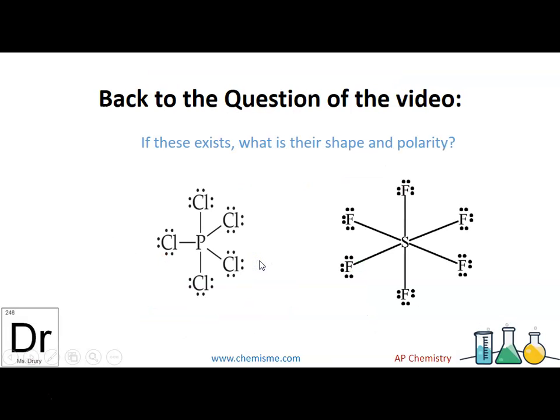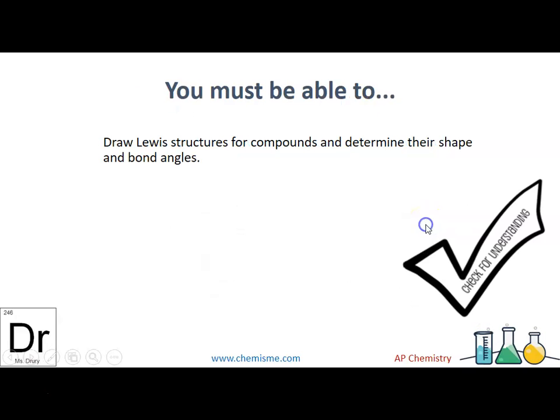So back to the question in the video, if these exist, what's their shape? These are completely bonded with five bonds, so this is trigonal bipyramidal. And this is completely bonded with six bonds, so this is octahedral. At this point, you should be able to draw a Lewis structure to determine their shape and bond angles.